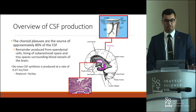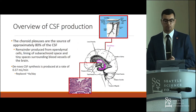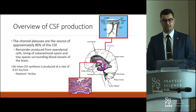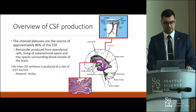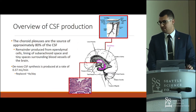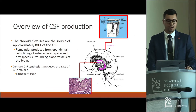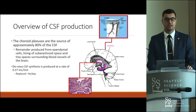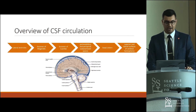Regarding CSF production: about 80% is made in the choroid plexuses in the ventricles, with the remaining 20% distributed elsewhere. De novo synthesis is about 0.37 milliliters per minute, and the CSF is turned over about four times a day — a high turnover rate, which we'll explain shortly.